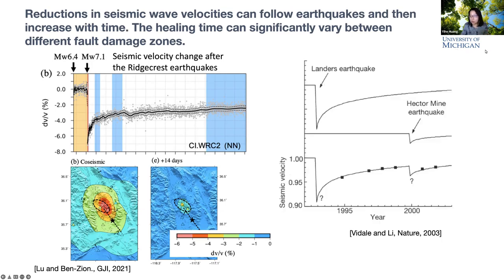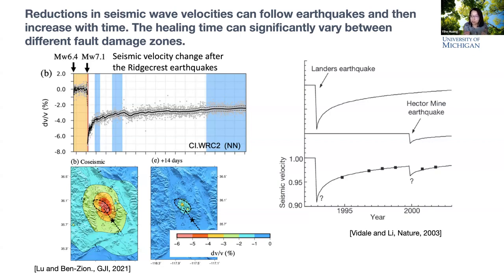Another observation comes from the Landers fault region, from the Vidale and Li 2003 paper. Using active surveys over time, they infer a slow increase of seismic wave velocities after the Landers earthquake, with another change following the Hector Mine earthquake. Comparing these two field observations, the healing time of damage close to the fault may be very different depending on the region — fast in Ridgecrest versus slow over years in Landers.